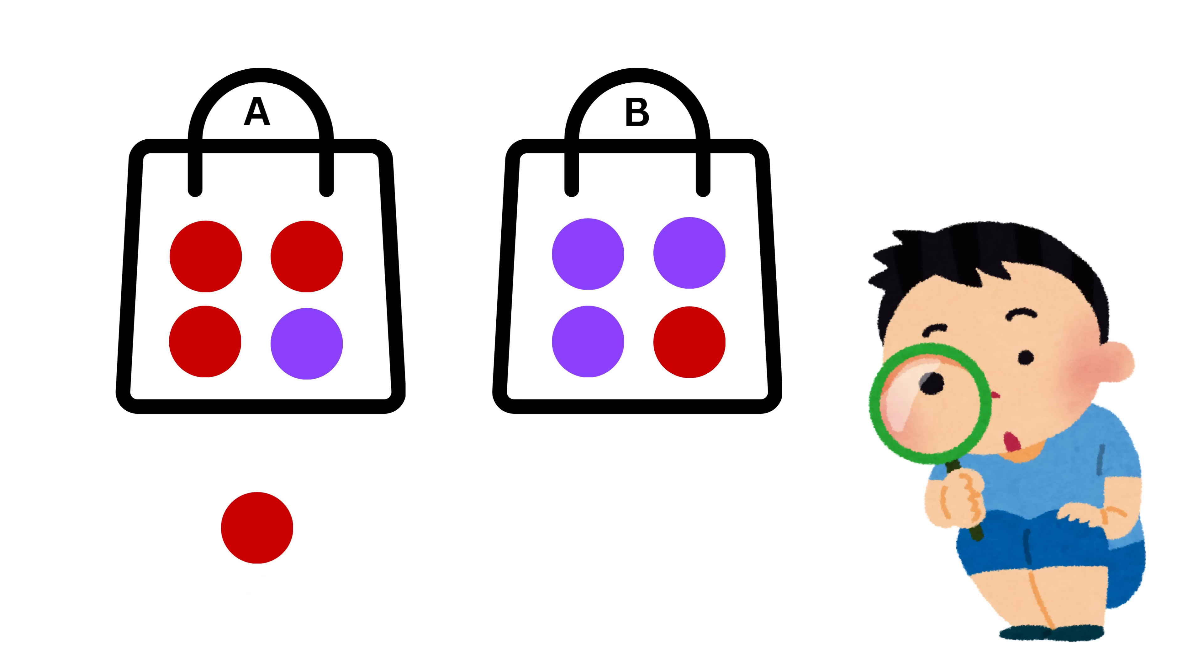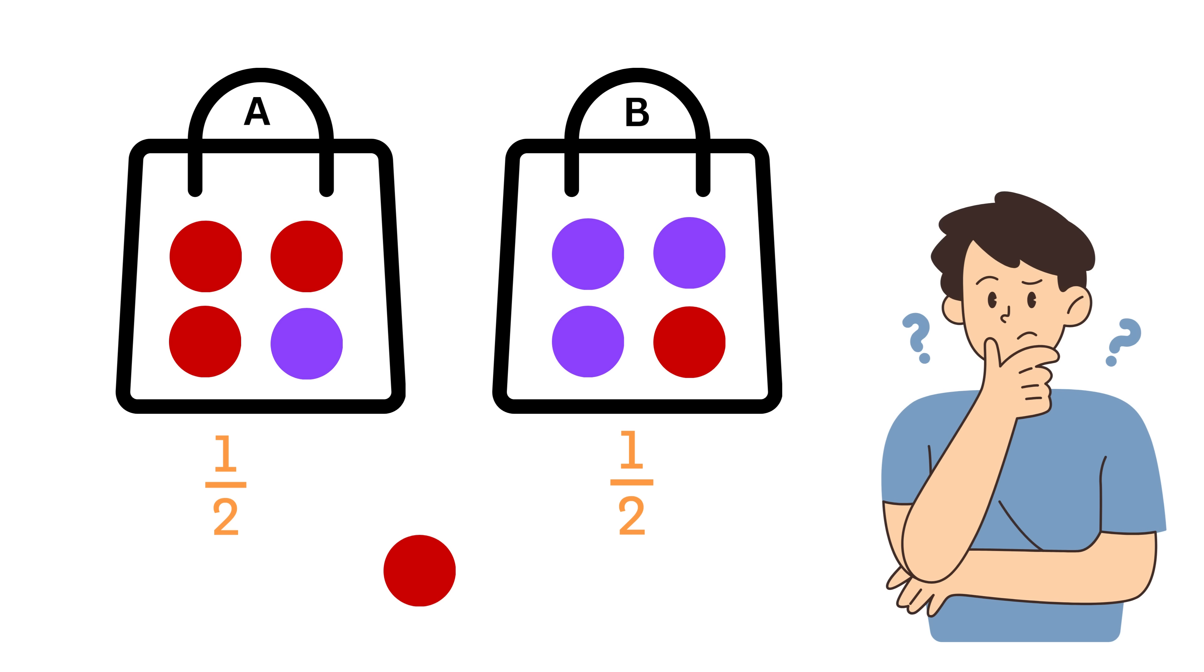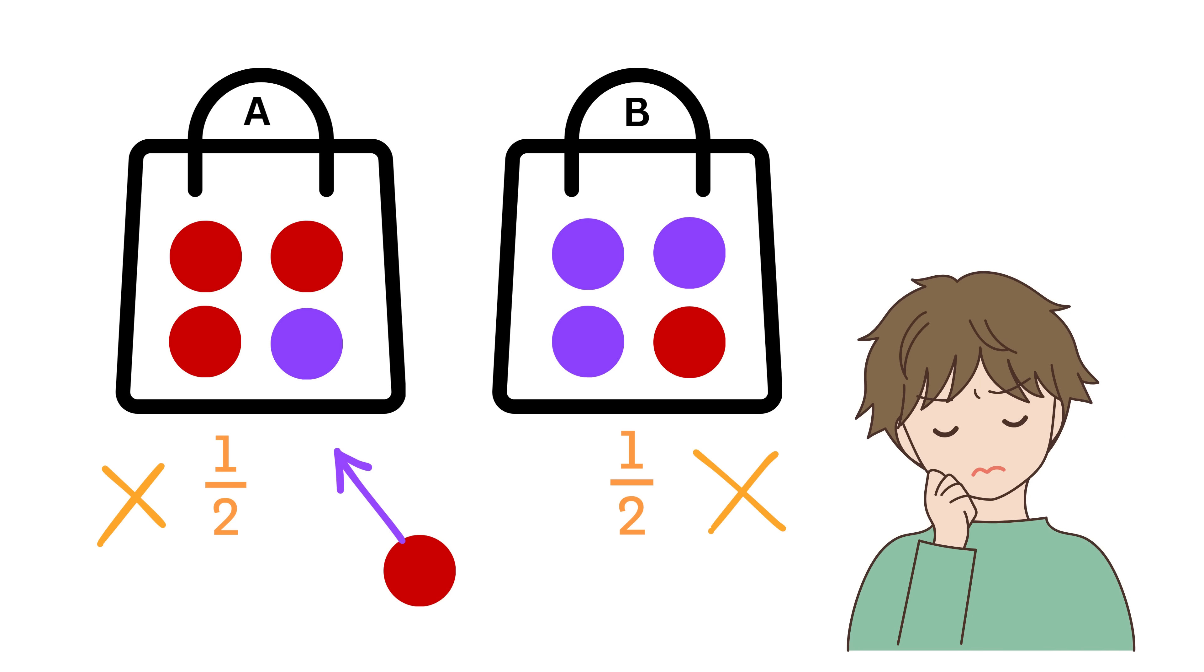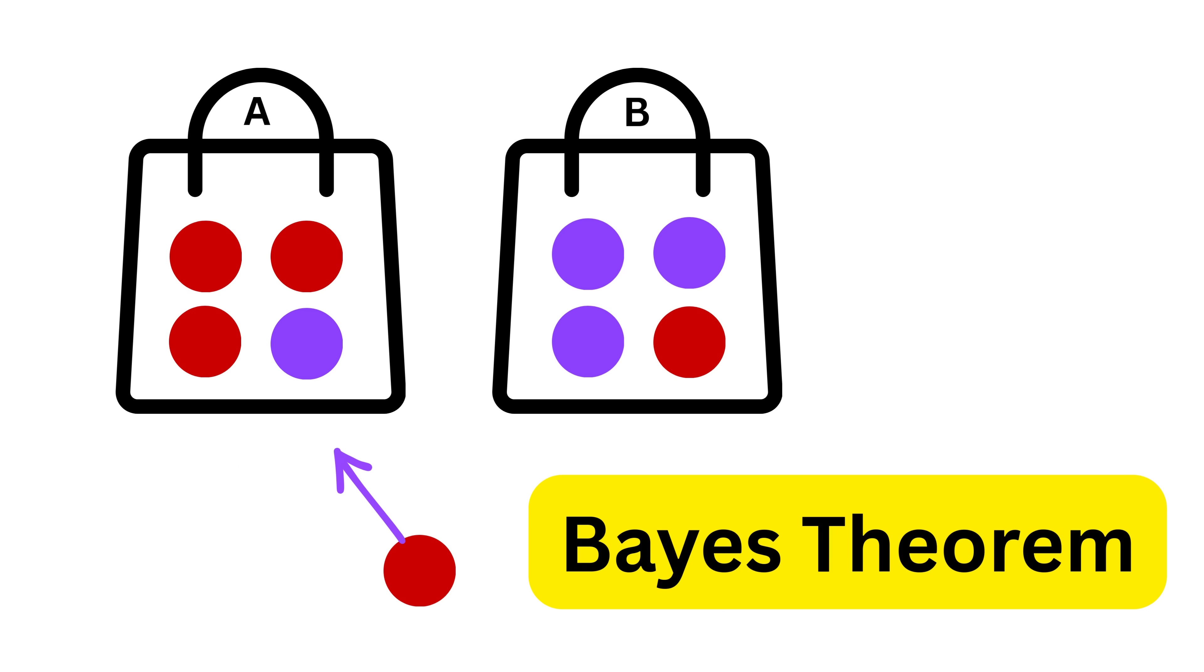But once we actually saw the outcome, that the ball turned out to be red, we gained new information. And this information makes us update our belief. We might think that instead of still thinking both bags are equally likely, we will now lean more towards bag A, because it is the bag with a higher chance of producing a red ball, right? This updating of probabilities based on fresh evidence is exactly the heart of Bayes' theorem.